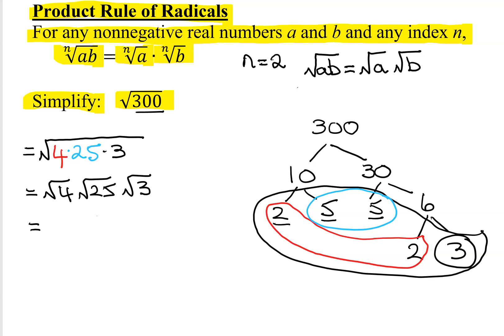Well, what's the square root of 4? The square root of 4 is 2. What's the square root of 25? 5. So I have 2 times 5 outside the radical, and I have a 3 inside. So what is my final answer? 10 times the square root of 3.